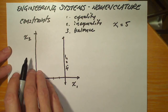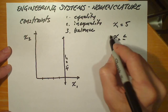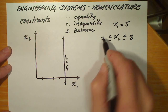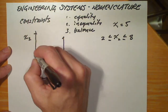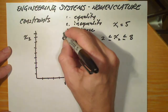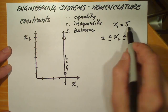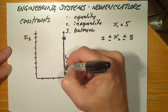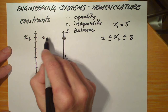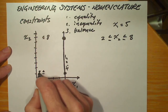x2, however, might be an inequality constraint, and we could express an inequality as less than or equal to, or greater than or equal to. In this case we're going to say 8 and 2. The feasible solutions — those that satisfy these two constraints — have to be found on this line segment between x2 less than or equal to 8 and x2 greater than or equal to 2.